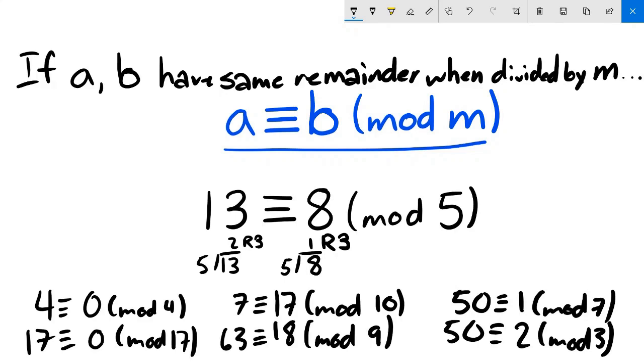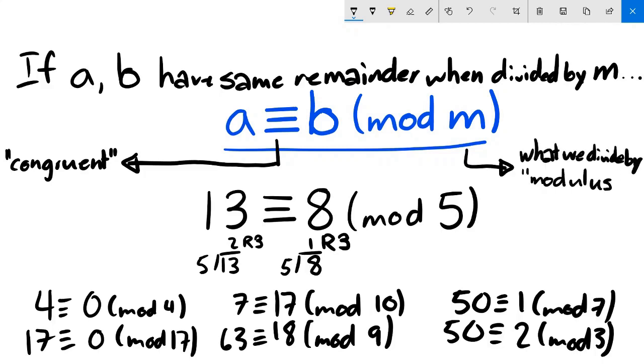Now picking the statement apart, we use three horizontal lines instead of an equal sign and say congruence instead of equals to denote the same remainders. We then write mod m to indicate m is what we're dividing by. This m is called the modulus. If it's clear what mod you're working in, you can drop the mod m.